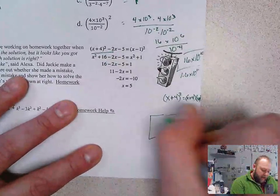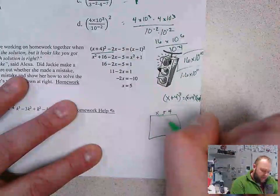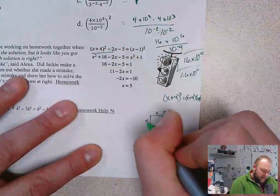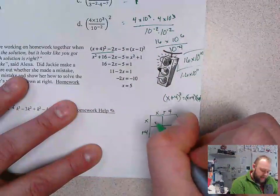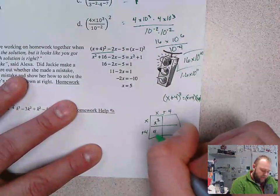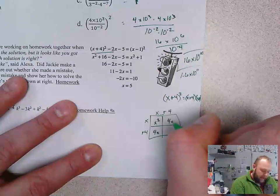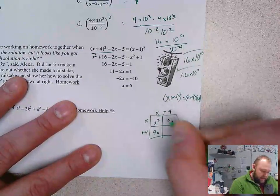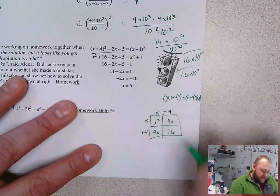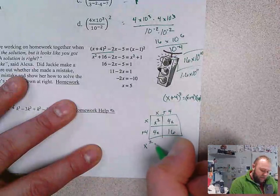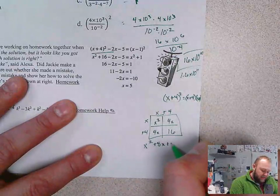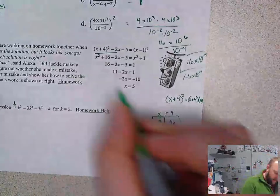Remember, we can use the area model to do this multiplication. x plus 4 times x plus 4. x times x, x squared. x times 4, 4x. x times 4, 4x. And 4 times 4, 16. Rewritten as x squared plus 8x plus 16. Let's rewrite this and solve it correctly.